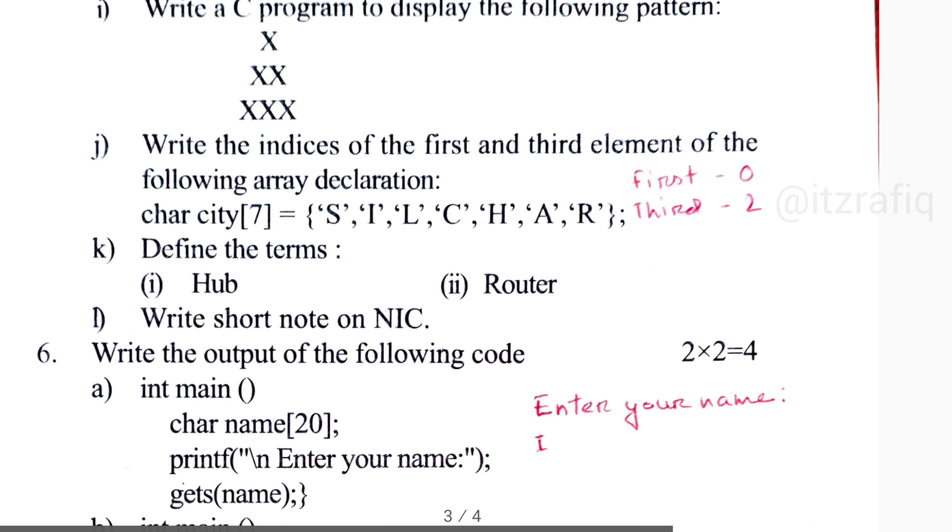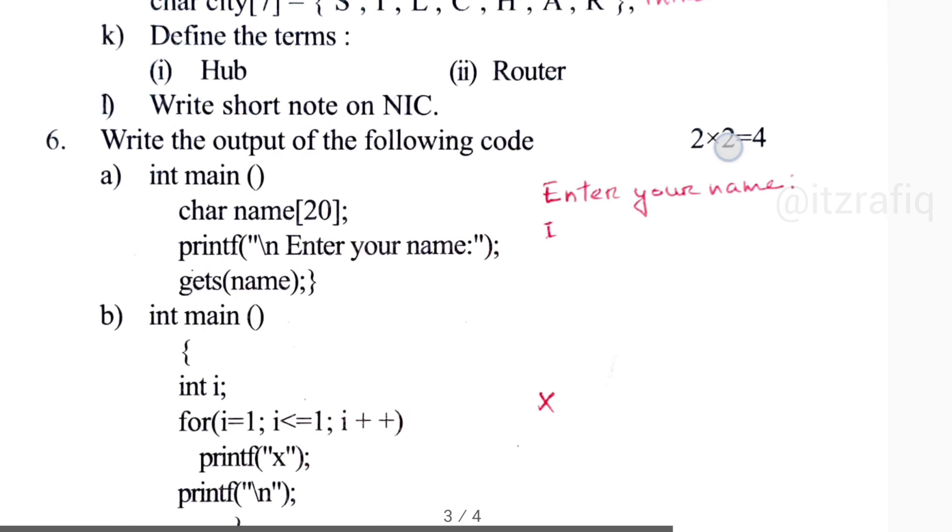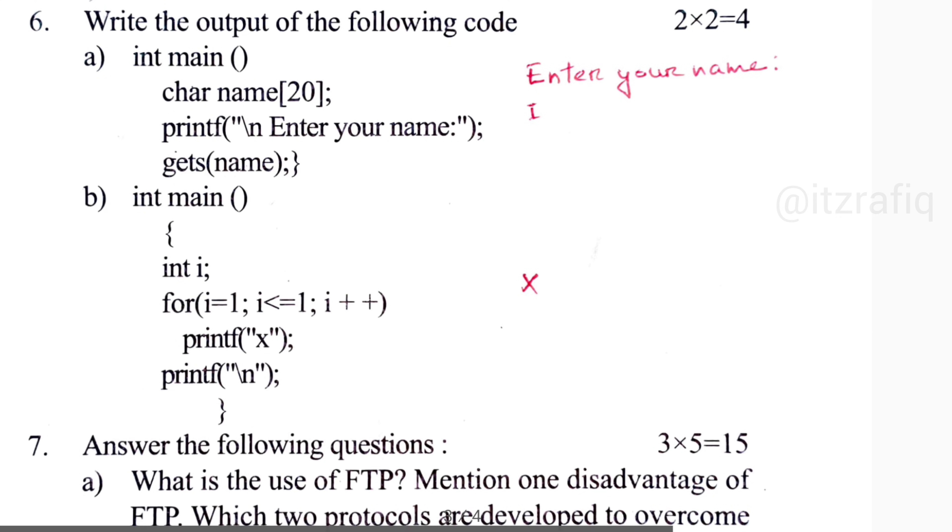Then number J, we have to write the indices of the first and third element. The first will be zero and third will be two. Then write the output of the following code. The first code is wrong only, because you see the opening parentheses or the bracket is missing and still the programming is also incomplete.